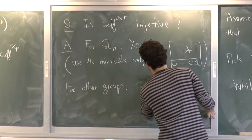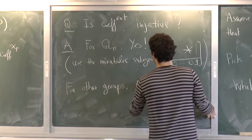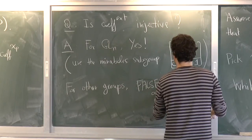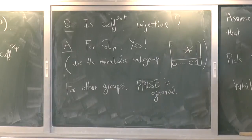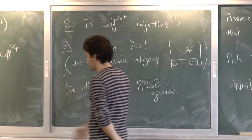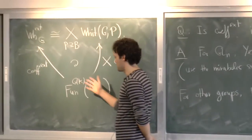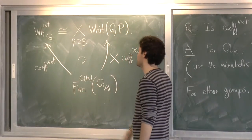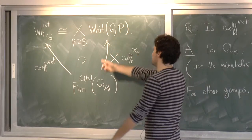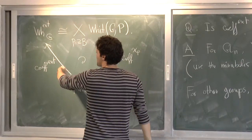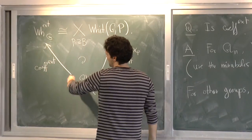OK. And so note that what I had before for GL2 automatically was that this map was injective. Now I don't have it anymore because I don't have the Fourier transform. But I can ask that. So my question is the extended coefficient injective.